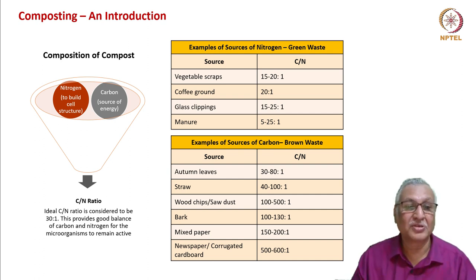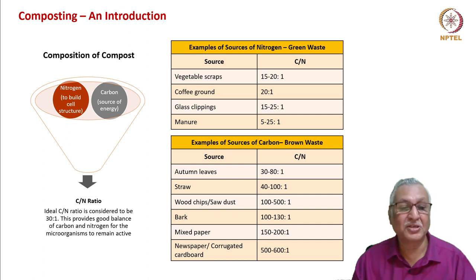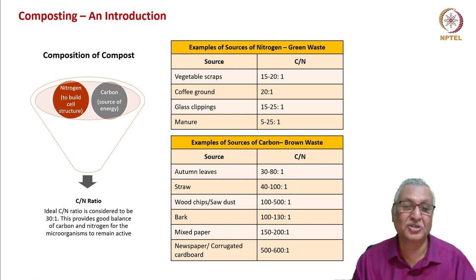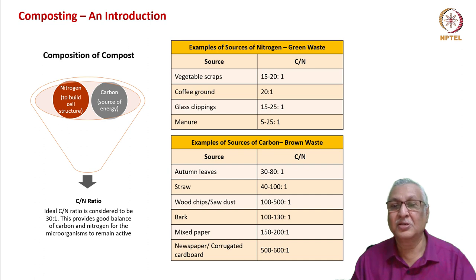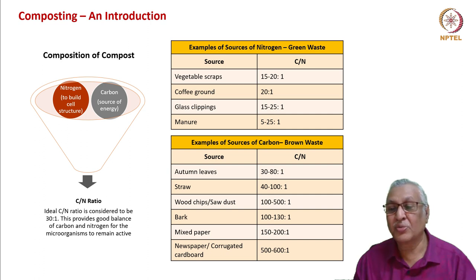Compost comprises nitrogen to build cell structure and carbon as a source of energy. The C:N ratio is a critical parameter — the ideal ratio should be 30:1, providing good balance for microorganisms to remain active. This proves that when you take up a product you should thoroughly research the science and technology behind it. Examples of nitrogen sources (green waste): vegetable scraps 15–20:1, coffee grounds 20:1, grass clippings 15–25:1, manure 5–25:1.